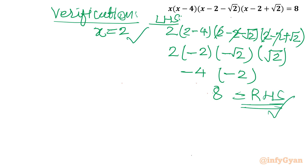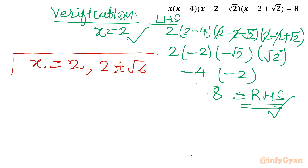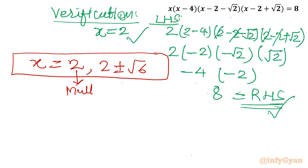So our four solutions are: x = 2 with multiplicity 2, and x = 2 ± √6. I hope you liked this video. Thank you so much for watching. Do not forget to like, share, and subscribe. Bye-bye till the next video, friends.